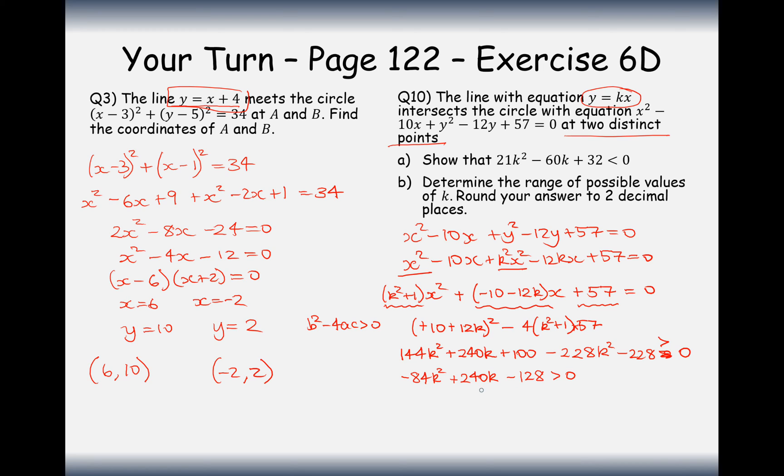Let's simplify. 144 take away 228 gives us minus 84k squared. Then, we have to add on 240k. And we have to take away 128 and set that as positive. Let's add it onto the other side and see if we can divide through by 4 at the same time. Minus 84k squared taken onto the other side will give us, divided through by 4 as well, 21k squared. 240 divided by 4 gives us 60 and take it onto the other side, that will be take away 60k. And, 128 divided by 4 gives us 32. Add it onto the other side and you get add 32.